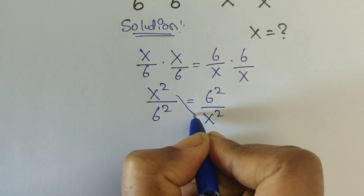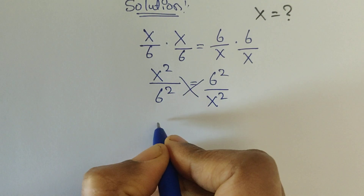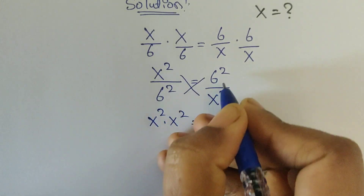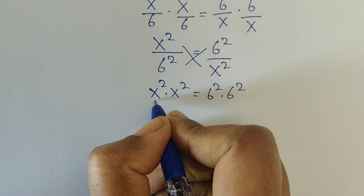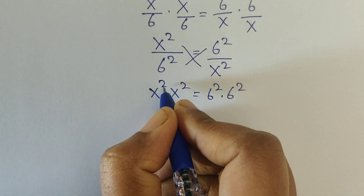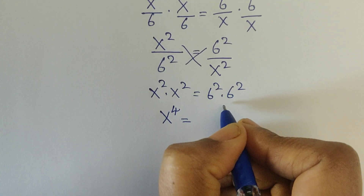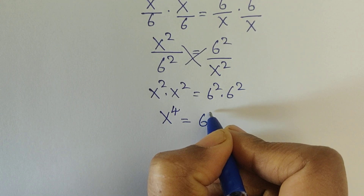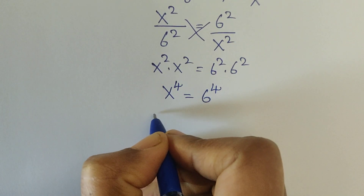Now we will do cross multiply. So it will be x squared times x squared equals 6 squared times 6 squared. So x squared times x squared equals x to the power 2 plus 2, which is x to the power 4. And 6 squared times 6 squared equals 6 to the power 4. Now move this term to the left side — it will be x to the power 4 minus 6 to the power 4 equals 0.